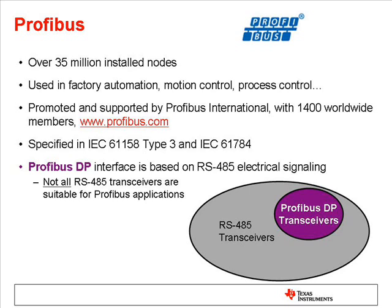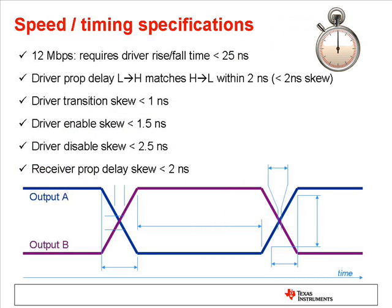Beyond the standard RS-485 requirements, PROFIBUS designers should consider several specific characteristics for the transceivers. PROFIBUS uses signaling rates up to 12 megabits per second, so the transceiver should be capable of that speed. In addition, the propagation delays should be well controlled and matched between rising and falling transitions. This allows for timing budget precision at the system level.